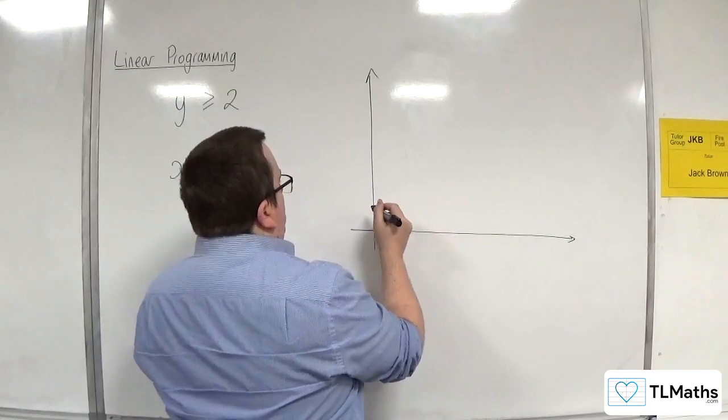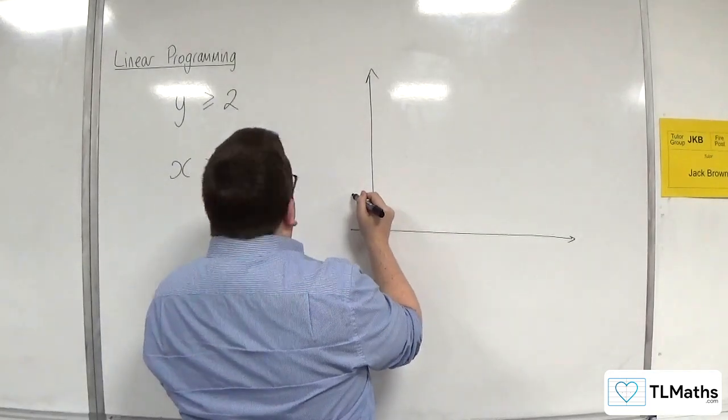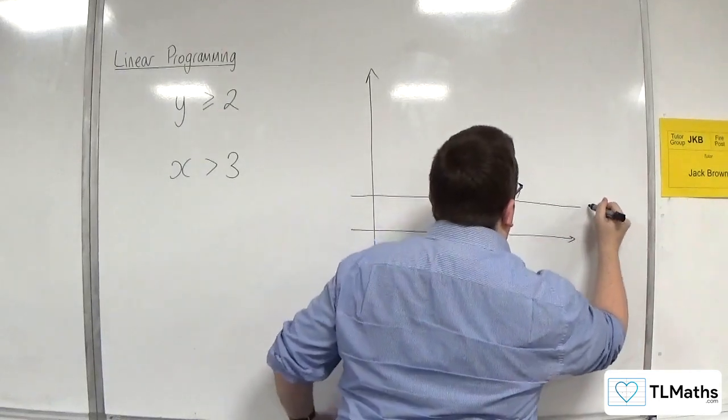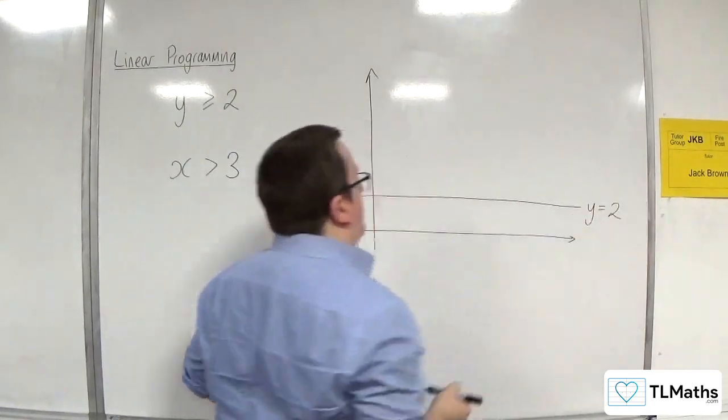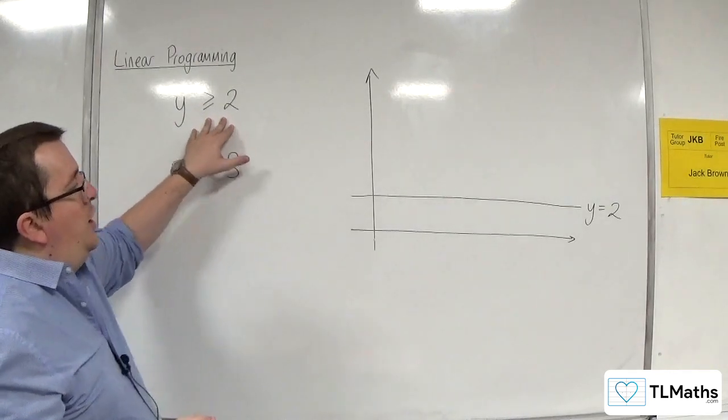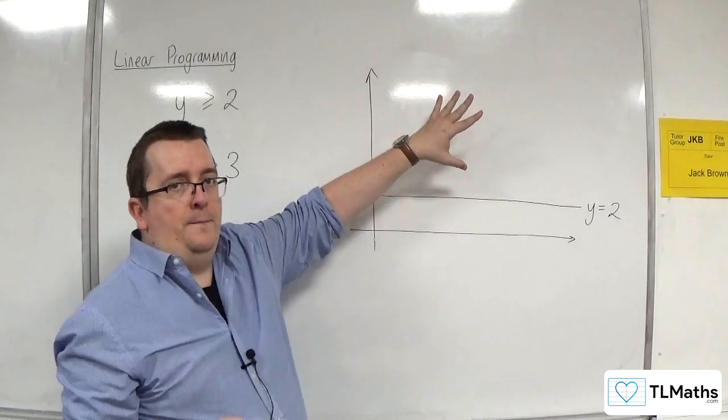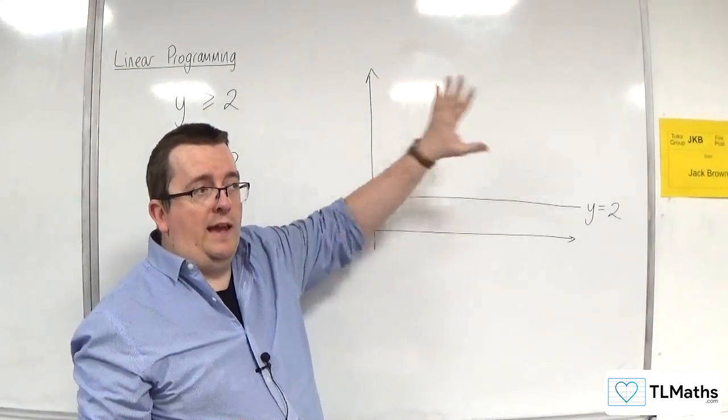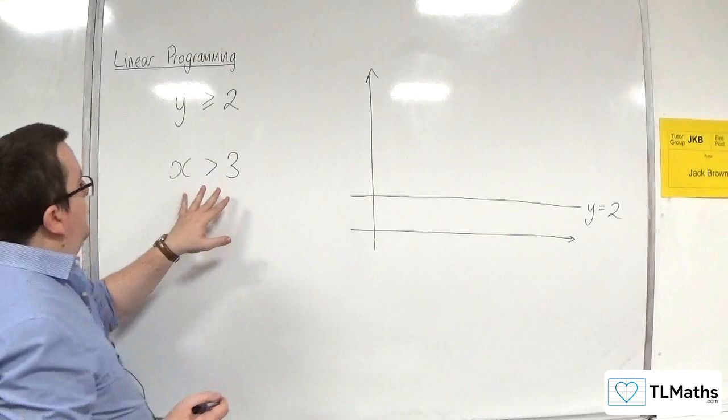Well, y is greater than or equal to 2, we're going to draw the line y equals 2. So here's the line y equals 2. And this would be looking at the region above that line. Now, I'm not going to shade in the region just yet.